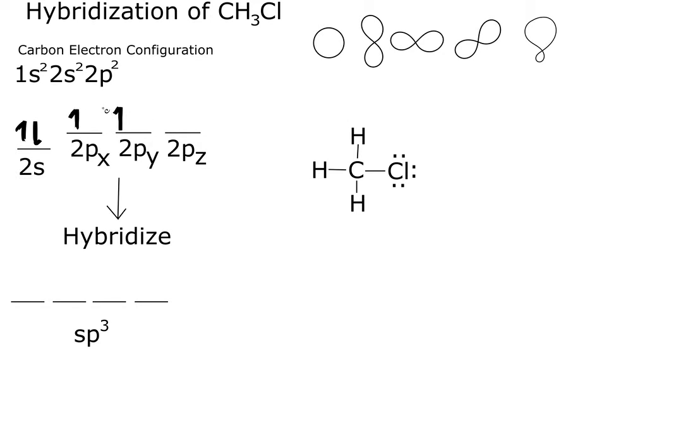So what we can do here is move one of these s electrons to our 2pz, and hybridize our orbitals, so that we have four regions we can bond. And the reason why we are able to do this is because from this 2s to this 2pz orbital, it only requires a very small amount of energy. So let's do that.